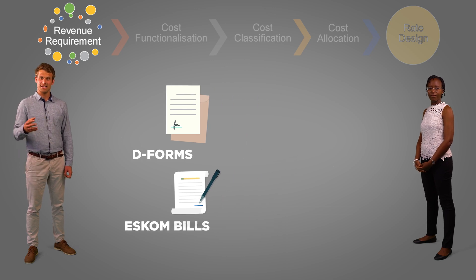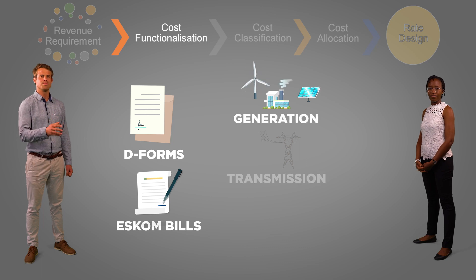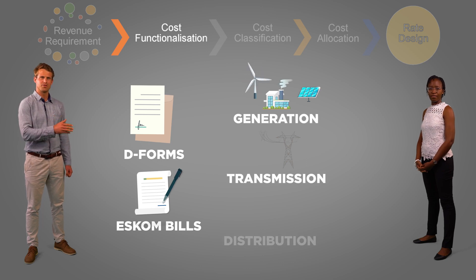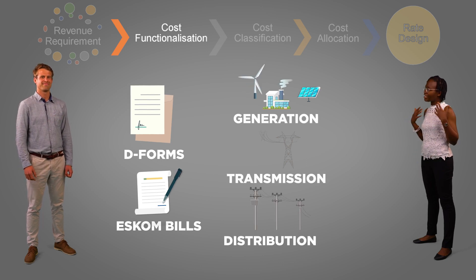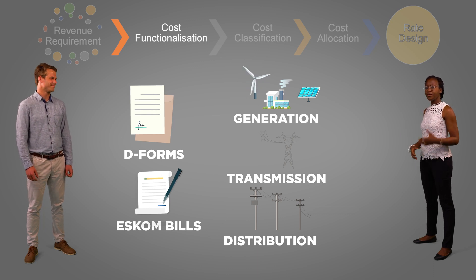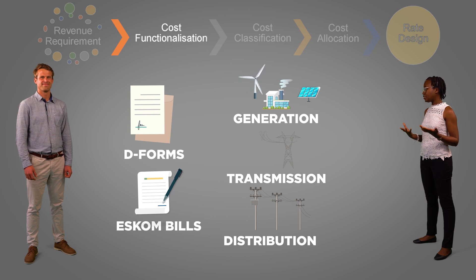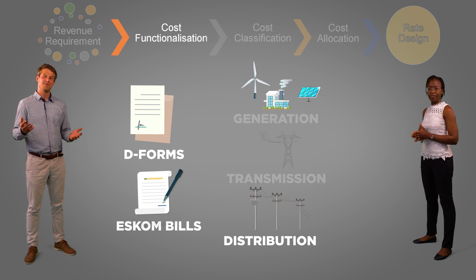And the next step is to split this revenue requirement into generation, transmission and distribution. And that's cost functionalization. So municipalities would mainly focus on distribution. Simple, right?